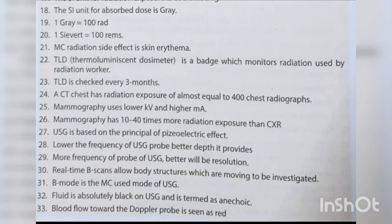The SI unit for absorbed dose is gray. One gray equals 100 rad; one sievert equals 100 rem. The most common radiation side effect is skin erythema. TLD (thermoluminescent dosimeter) is a badge that monitors radiation used by radiation workers and is checked every three months.